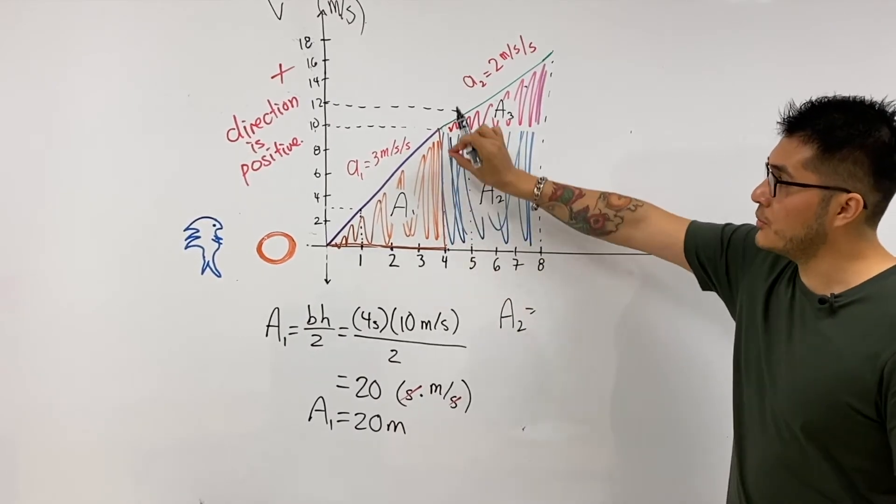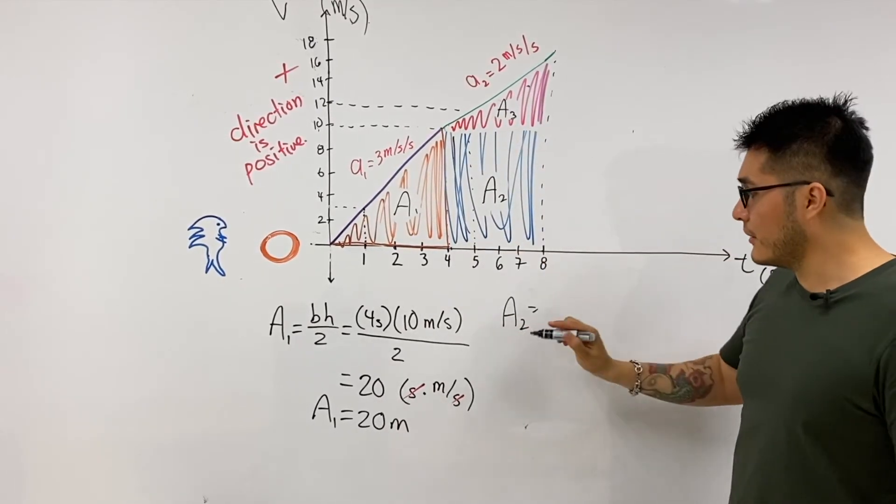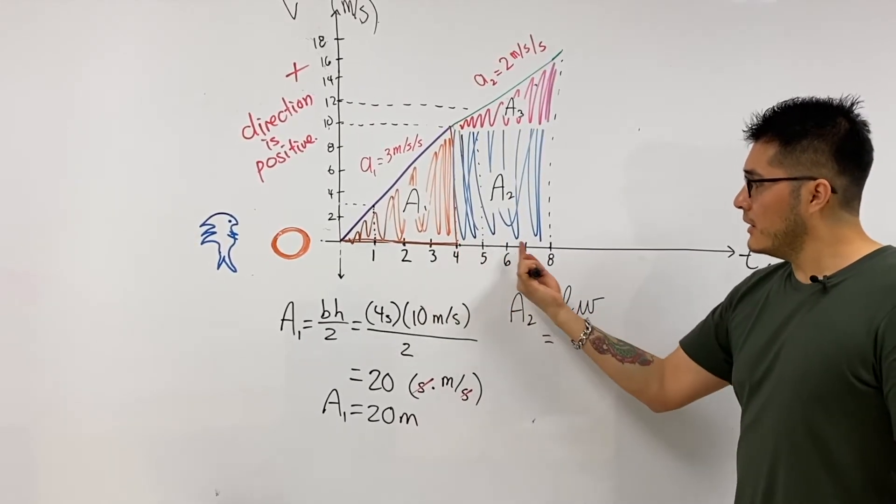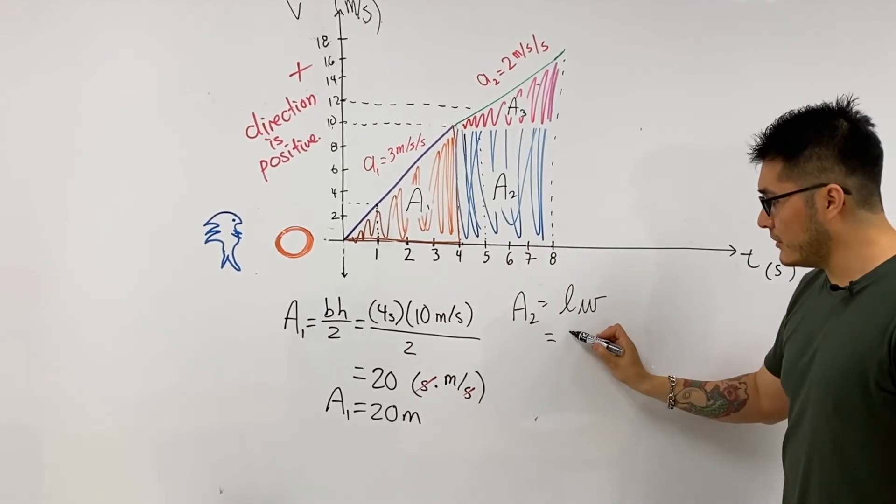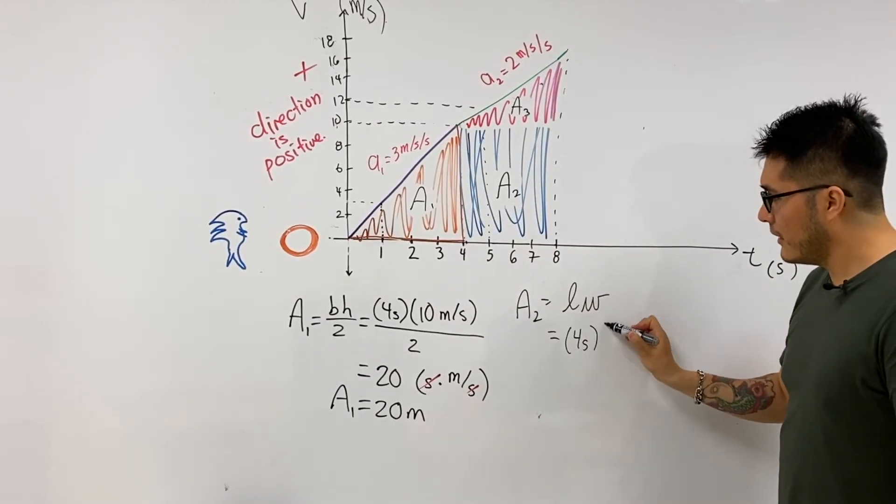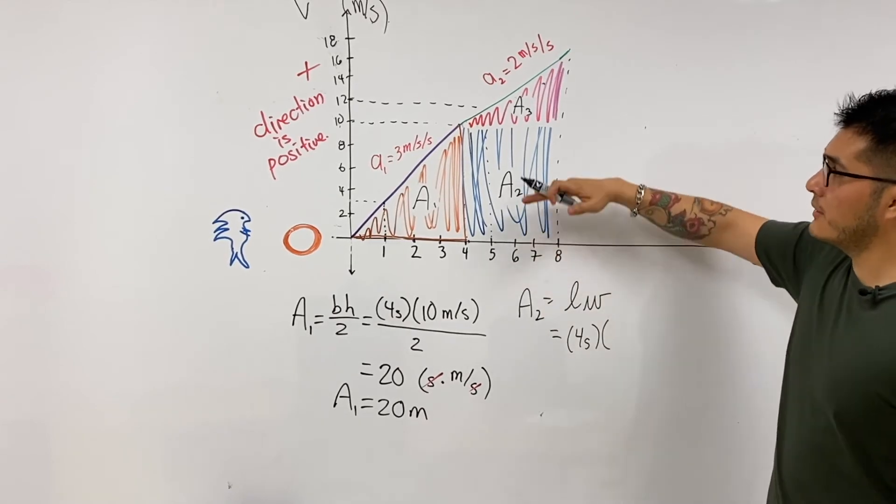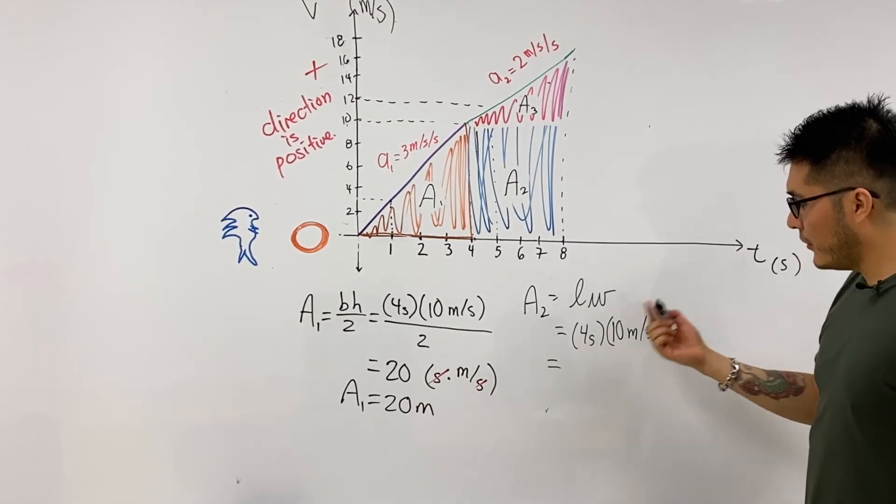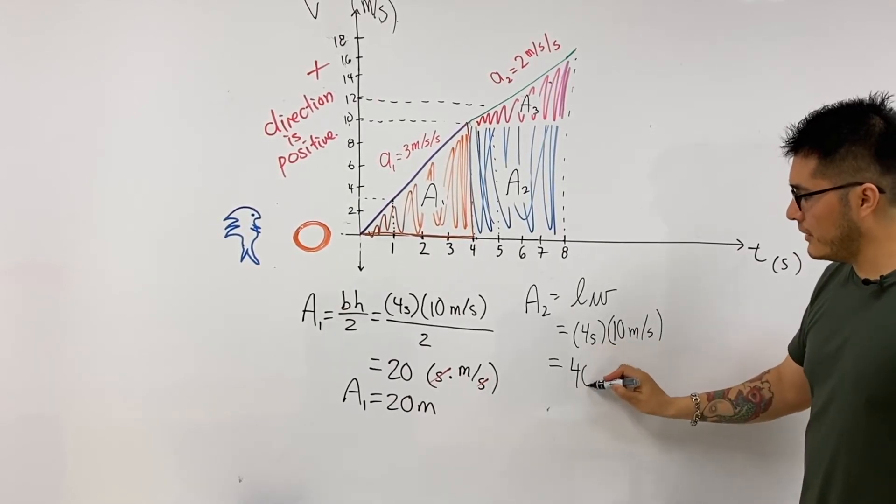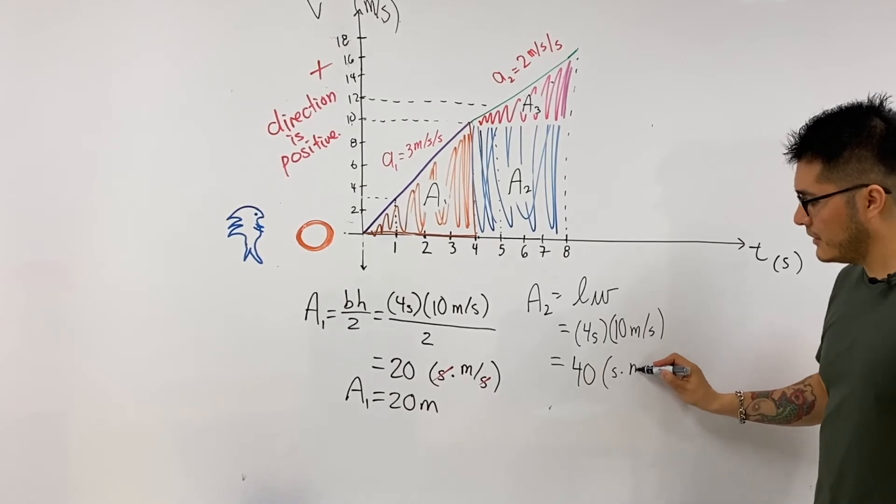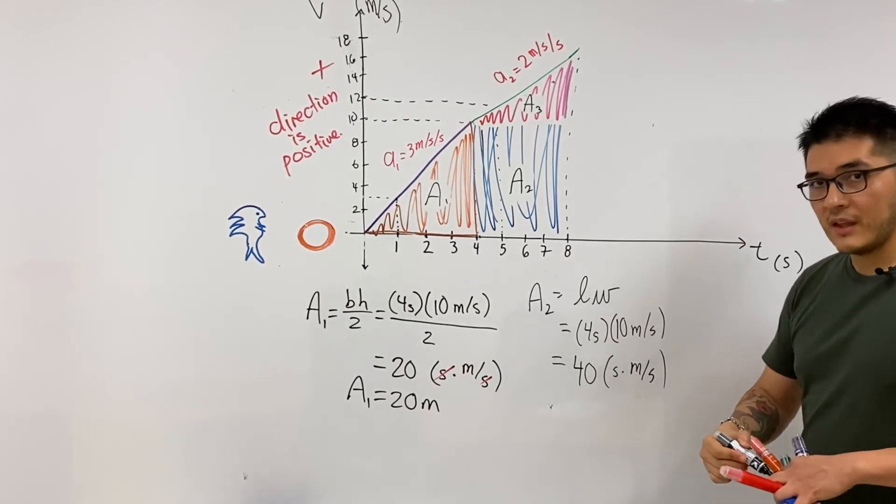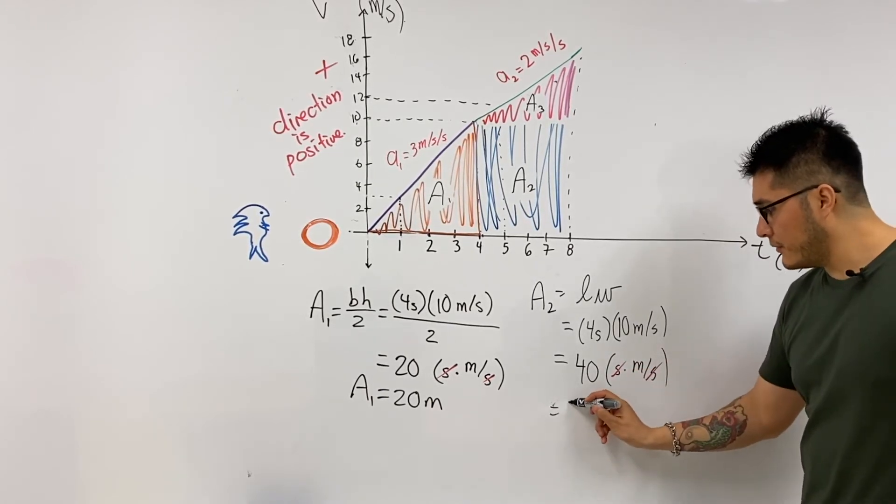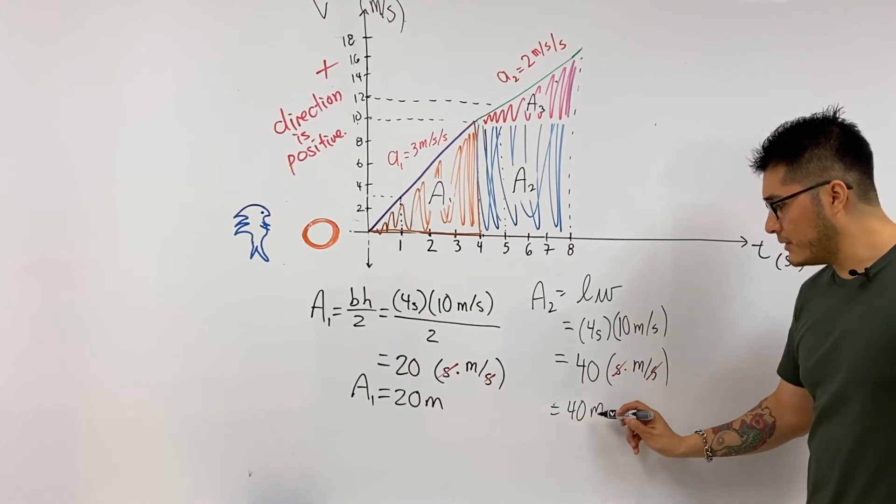Area of the second portion, which we're taking as a rectangle, is going to be length times the width. Length is going to be a four second time interval change, and width is going to be 10 meters per second. Four times ten, that's going to be 40. And once again we have seconds times meters per second, so the units of seconds will cancel out and we'd like to work with just 40 meters for area two.